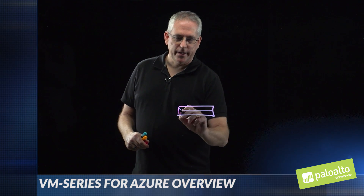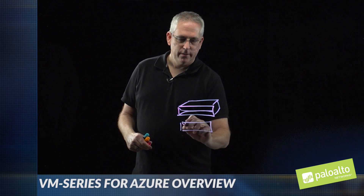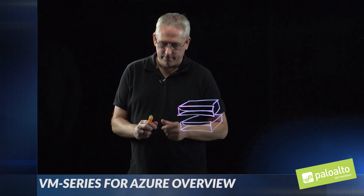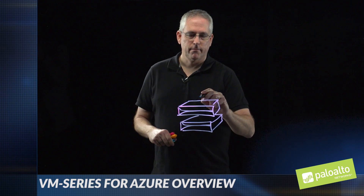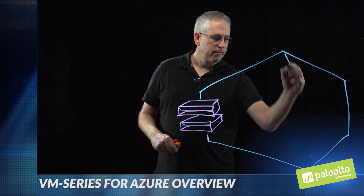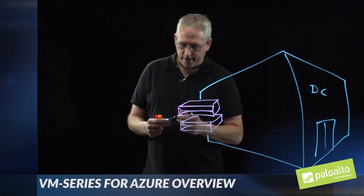Let's start with the private data center — the private cloud piece of the hybrid cloud solution. Typically, we're going to have a pair of firewalls for HA, securing the perimeter of this private data center. And in this data center, we're going to deploy a web application as an example.